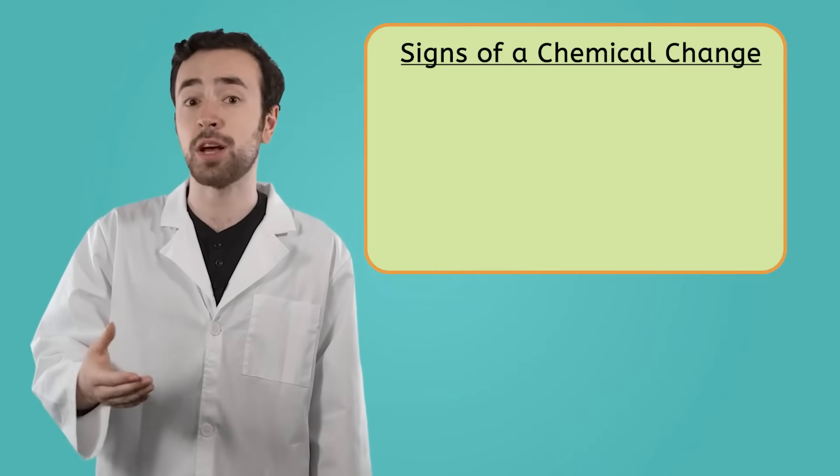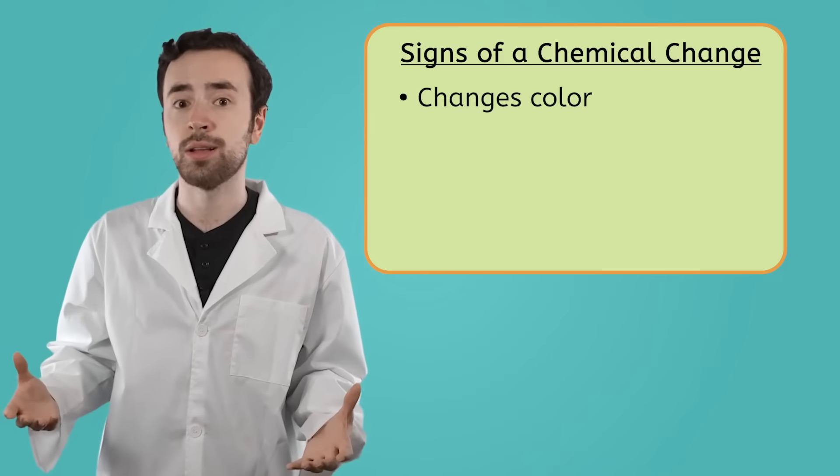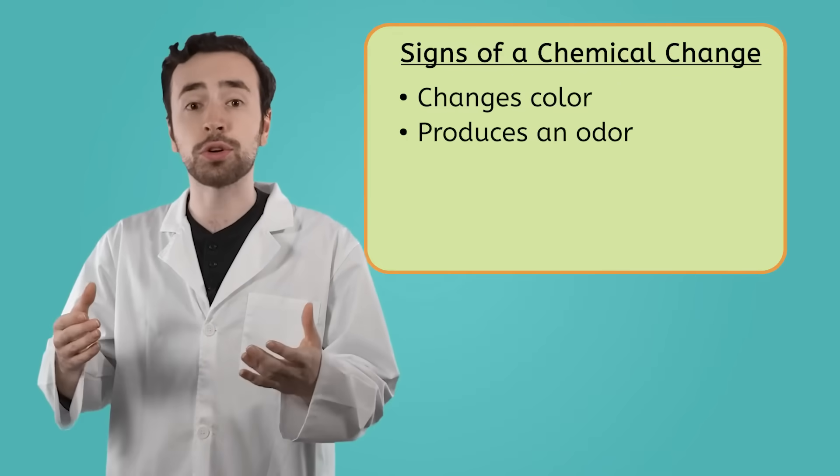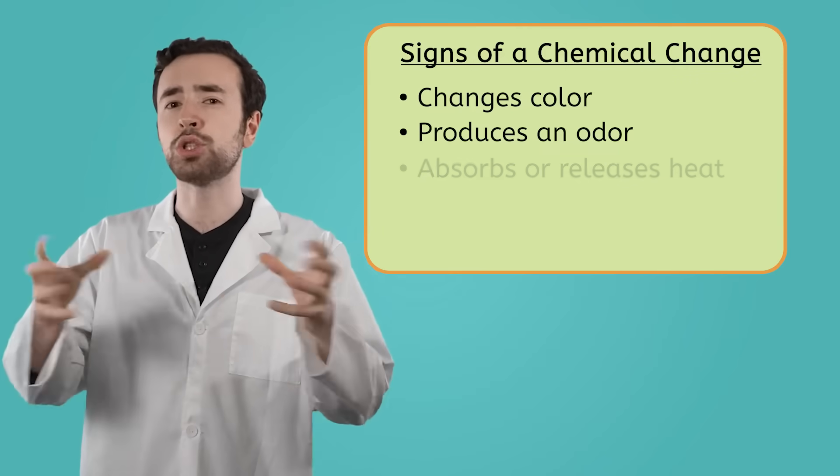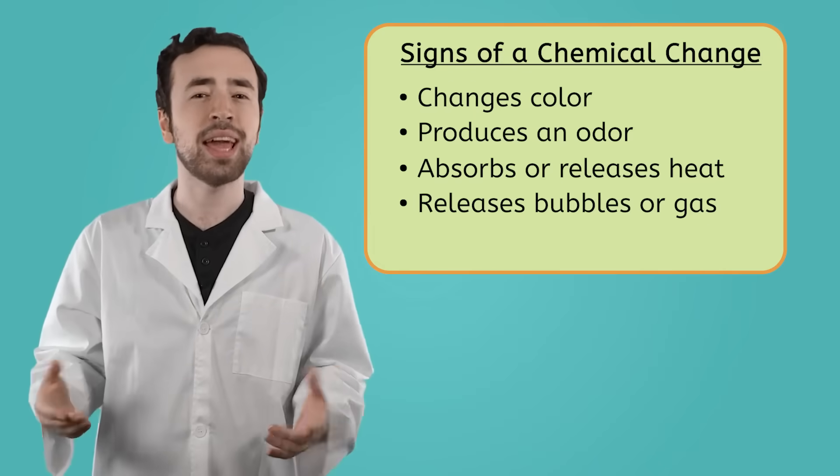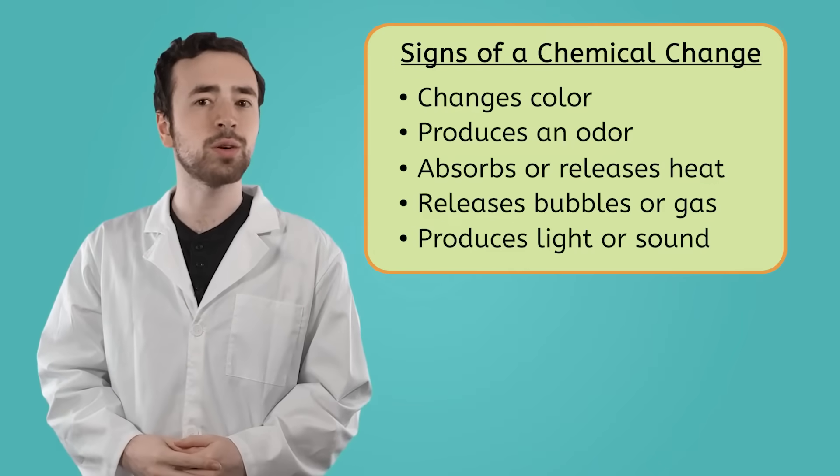For instance, the matter itself could change color. That's what happens with rust, right? It could also produce an odor, which is a smell. It could absorb or release heat. It could produce bubbles or gas. And it could also produce light or sound.